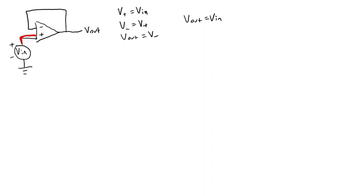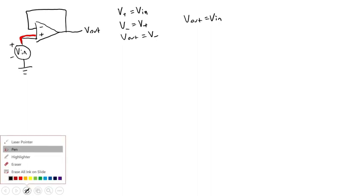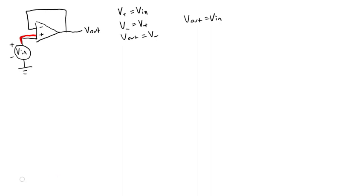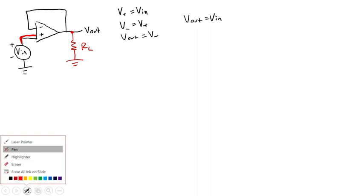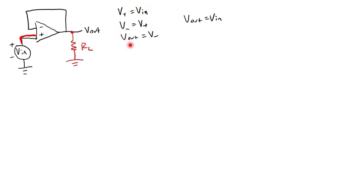That might seem kind of silly, but what's interesting is if we attach a load resistor, what happens if I attach a resistor between RL and ground? That resistor does not affect any of these equations. Everything I just wrote here is still true.